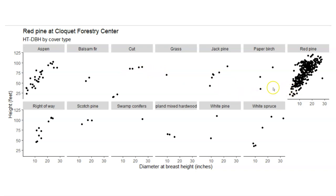As you might expect, most of the red pine trees at Cloquet are found in the red pine cover type, but not necessarily all of them. There are lots of red pine trees growing in what's designated as the aspen cover type, and then lesser known for other ones.